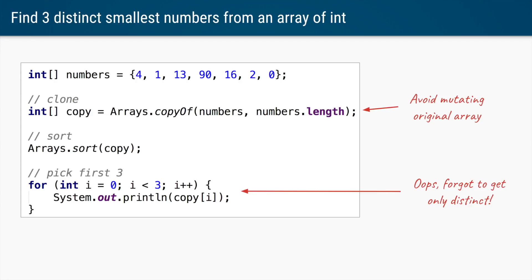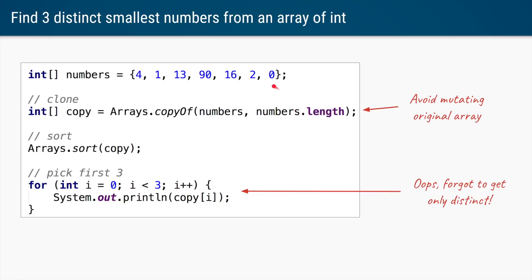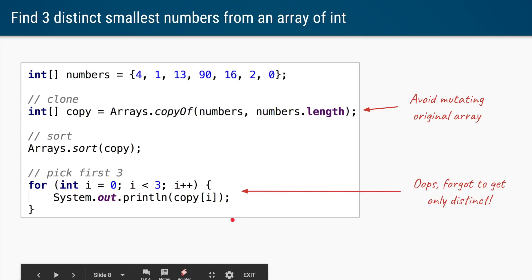Let's take a slightly more complicated example. Say we have an array of integers and want to find the three distinct smallest numbers — so for example 0, 1, and 2. One way is to sort the array and get the first three numbers, but sorting mutates the original array. So we create a copy, sort it using Arrays.sort, and use a simple for loop to get the first three elements. We'd also need extra code to handle distinct elements — for example if there's an extra zero in the array.